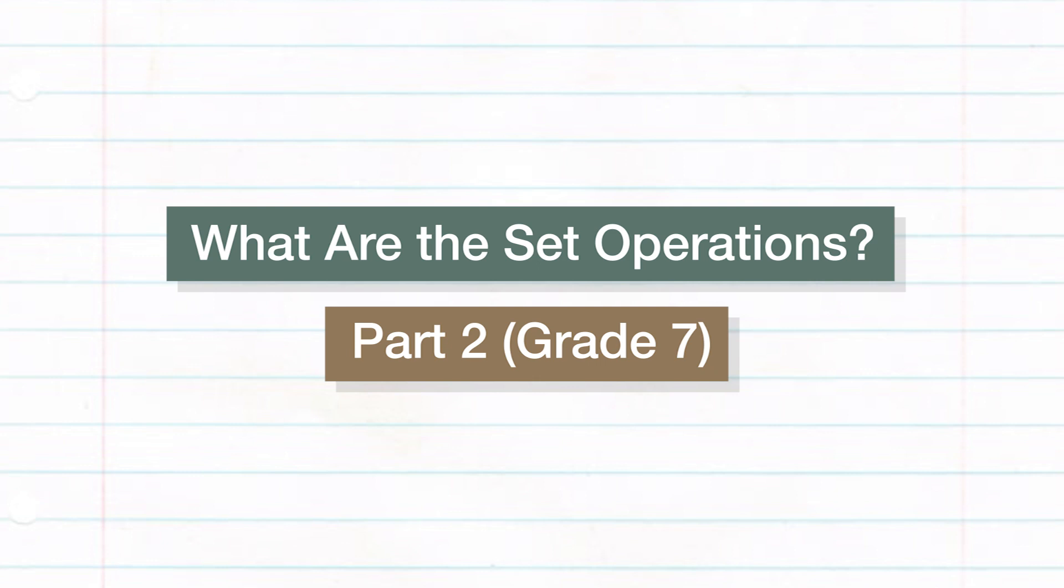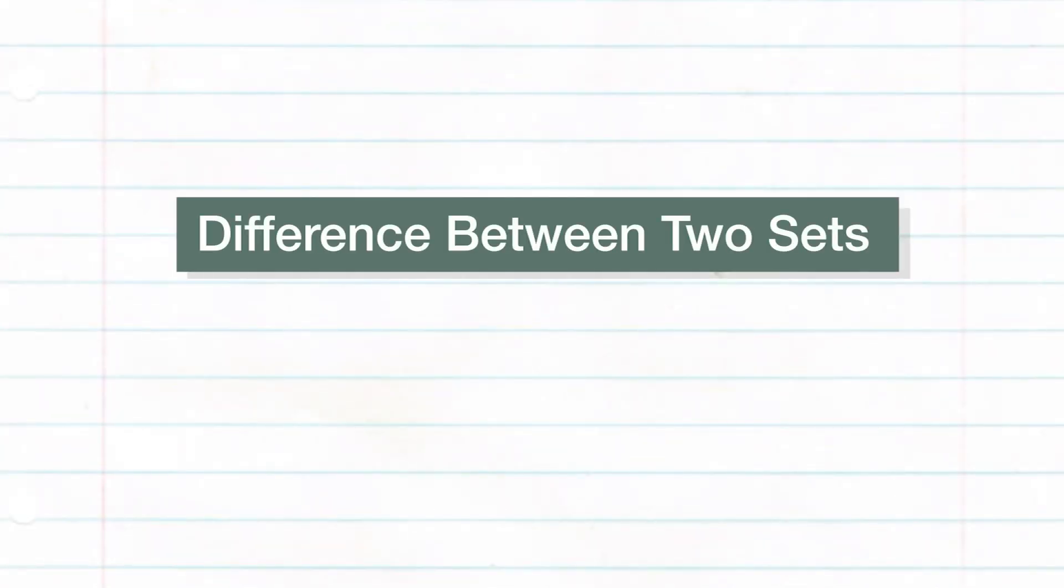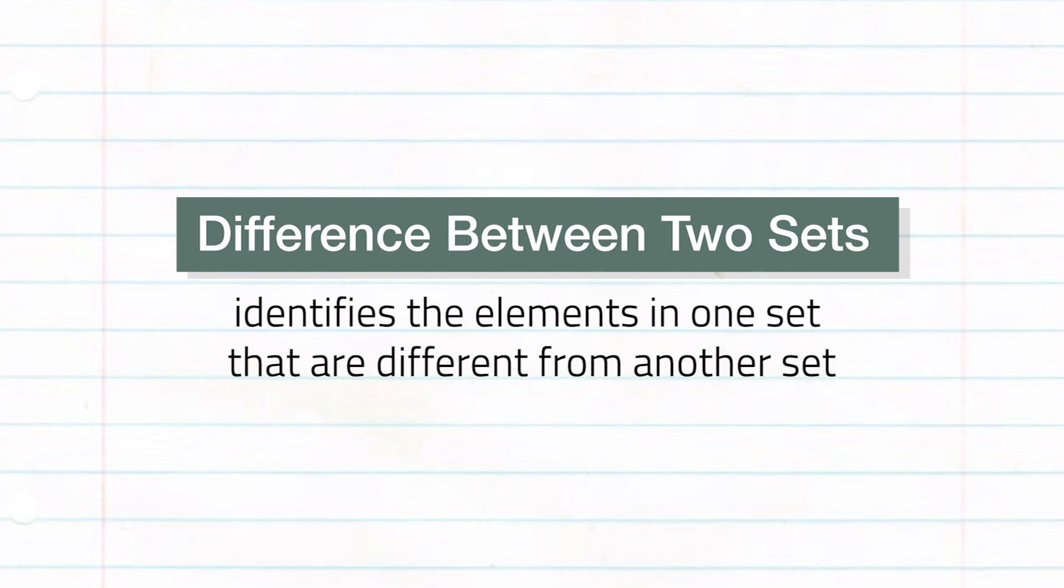The third set operation that we are going to learn is the difference between two sets. As the name suggests, it is about the elements in one set that are different from the other.